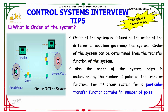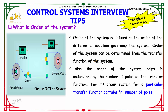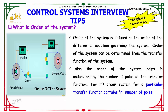What is the order of the system? The order of the system is defined as the order of the differential equation governing the system. The order can be determined from the transfer function of the system. Also, the order of the system helps in understanding the number of poles of the transfer function — for an nth order system, the transfer function contains n number of poles.